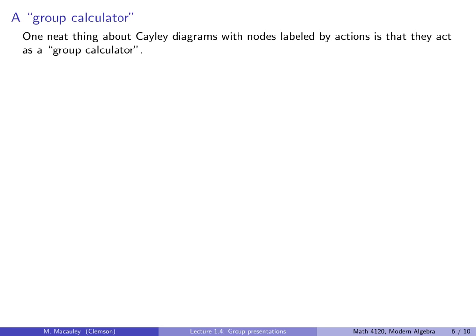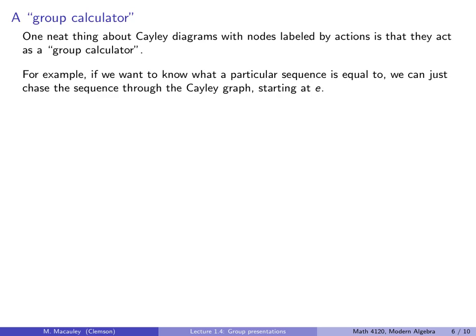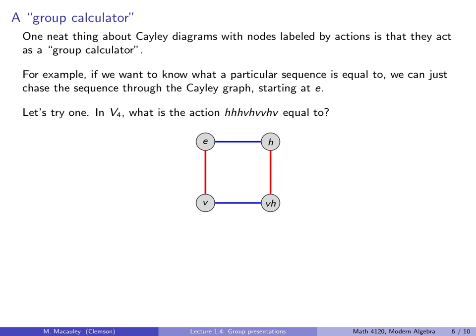A neat thing about the Cayley diagram with nodes labeled by actions is that they act as a group calculator in some sense. For example, if we want to know what particular sequence is equal to, we can just chase the sequence through the Cayley graph starting at the identity. Let's try one. So in the Klein 4 group, what action is this thing equal to, HHHVHVVHV? Let's try it. Let's start with the identity. H is the blue arrow and V is the red arrow. So H, H, H, V, H, V, V, H, V. That's equal to H.